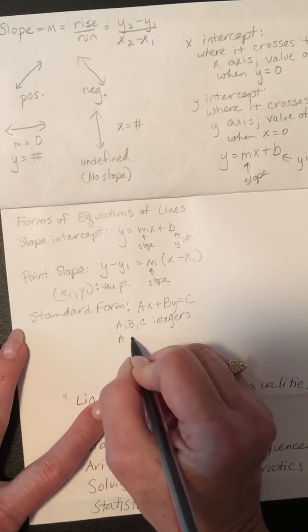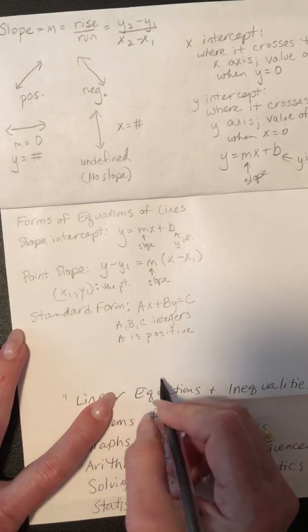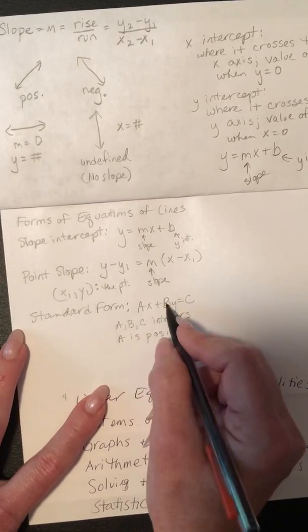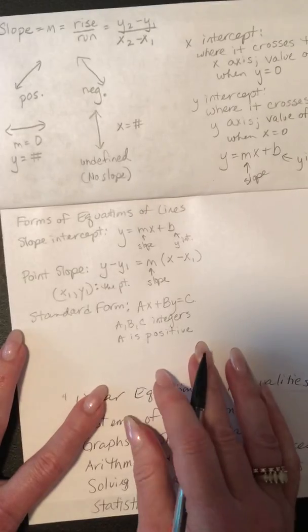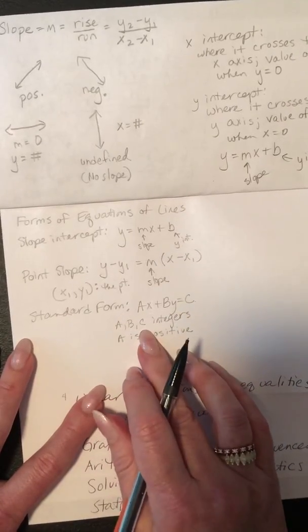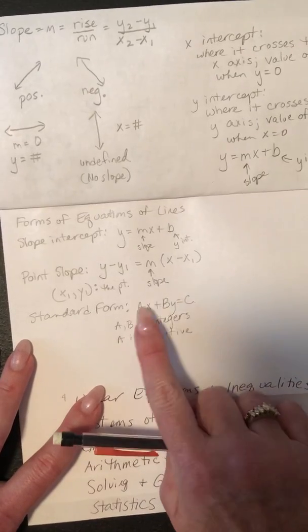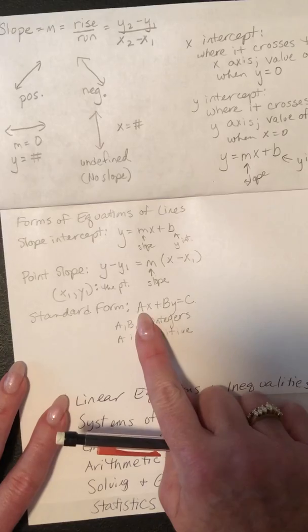a has to be positive. And there can't be a greatest common factor for a, b, and c other than 1. So, if it's in standard form, like it said, 2x plus 3y equals 12, and you want to know what's the x-intercept, you would put in 0 for y, and you could find the x-intercept.